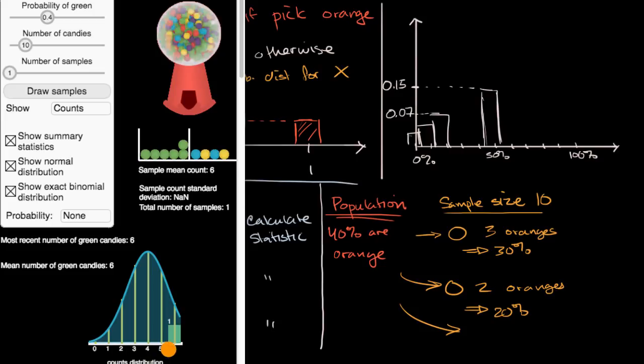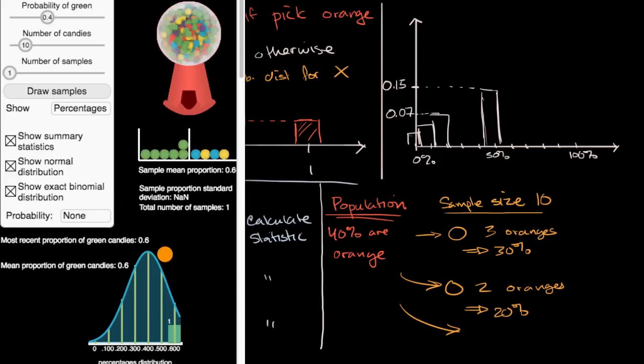So out of the possible outcomes, we're now going to tally one of our outcomes having, hey, we got six of our 10 to be green. And if we wanna show the proportion instead of just the count, we can just pick percentage here. So here we've had one scenario already where 60% were green.